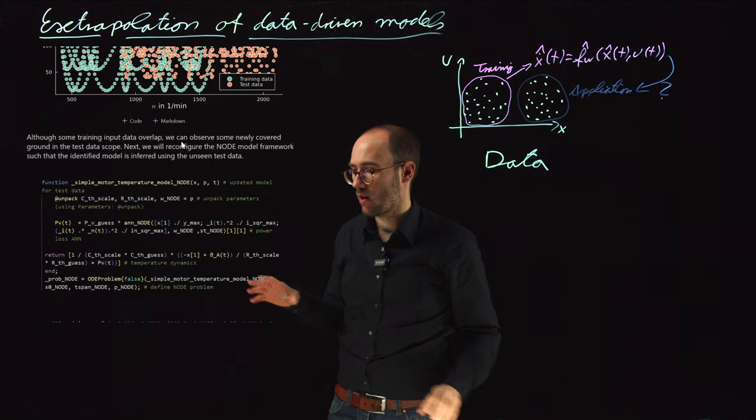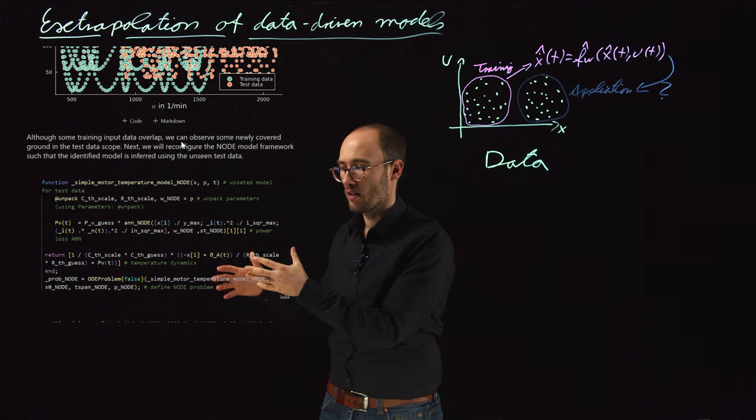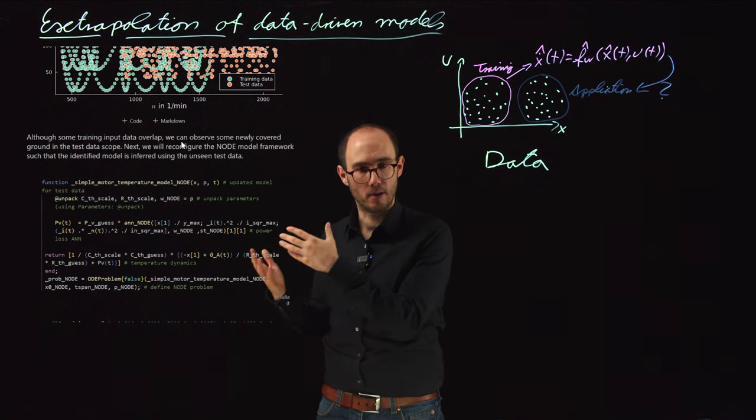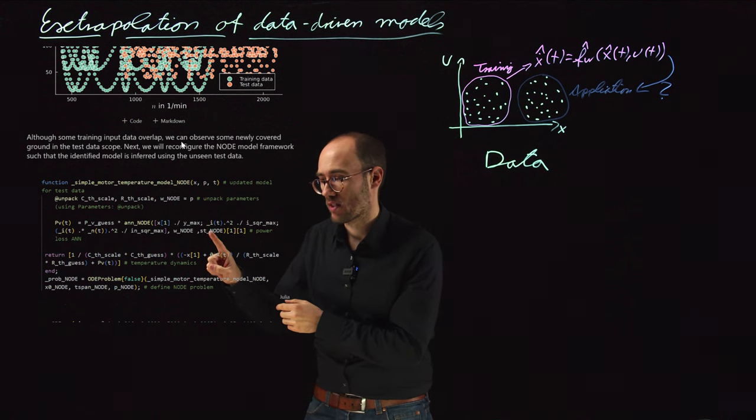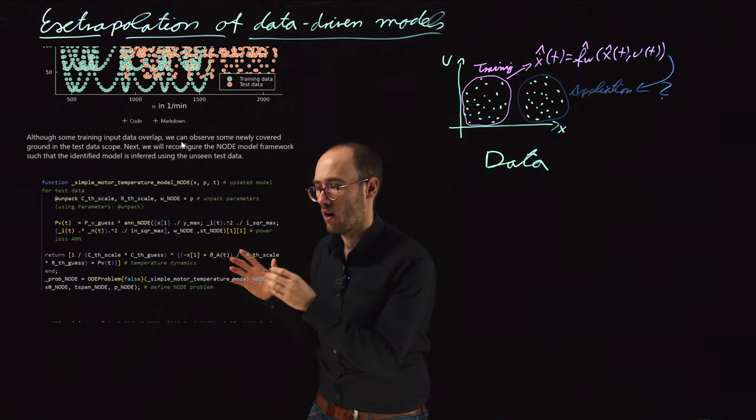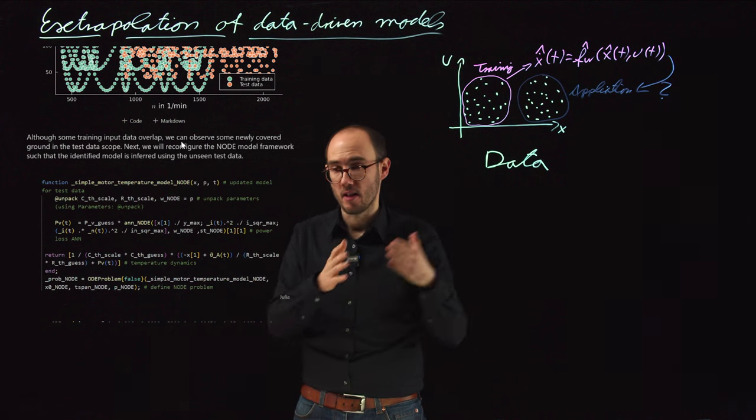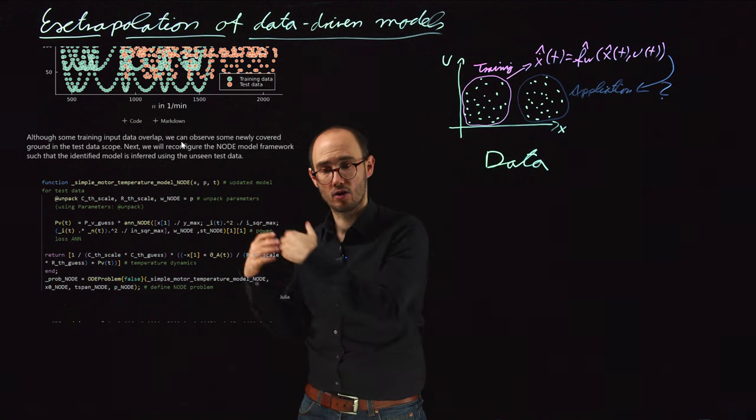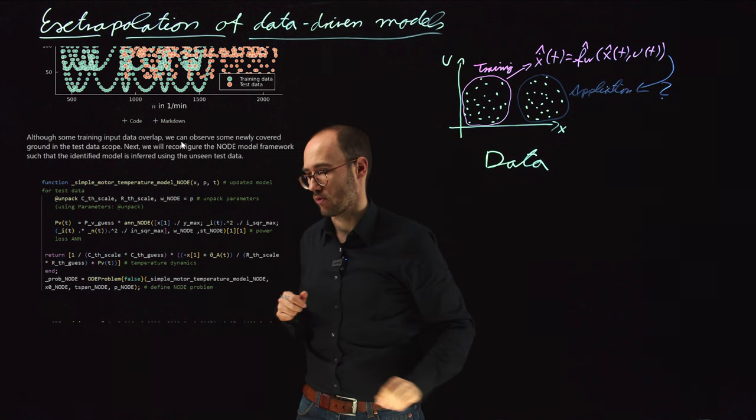Okay. With that, we basically now take the previously identified model. The model structure and the model parameters are, of course, now fixed. We have identified them previously. And the only thing which is happening, we can see it here with this underscore notation, is that we now infer the model based on the new input data. So model has been identified and we just give the model new input data to see what is happening in terms of the model system response.